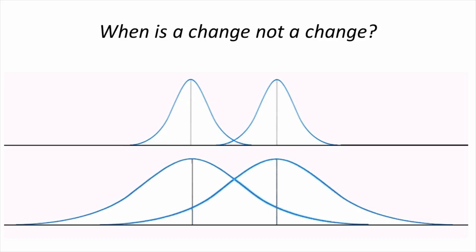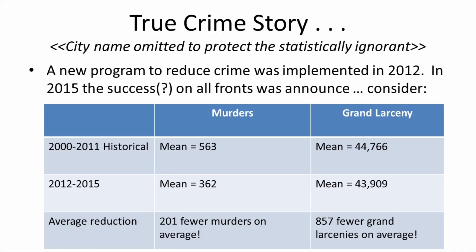Let's consider a real-life example. This is a true crime story. While the name of the city has been omitted to protect the statistically ignorant, I assure you that these numbers are supported by real data. In this particular city, data was taken from the year 2000 to 2011. The city was frustrated with the crime rate. A new commissioner took charge and implemented some new plans. In 2016, the commissioner announced the success of the new policies. Murders on average were down by 201. Likewise, grand larceny on average was down by 857. A straightforward comparison of the historical averages for each of these categories seemed to support the commissioner's claim of success.